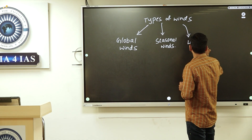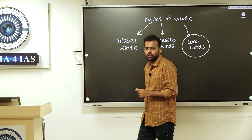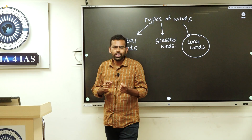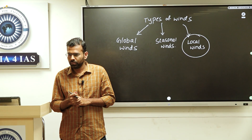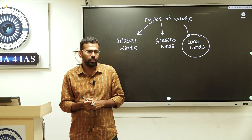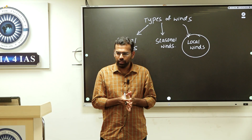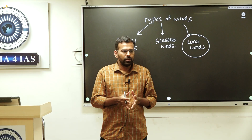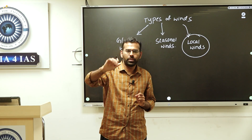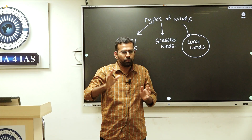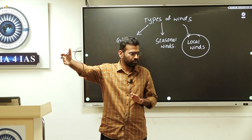The third type of winds is called local winds. These are winds which originate due to local pressure differences — for example, within India, pressure differences between Karnataka and Madhya Pradesh or Telangana.